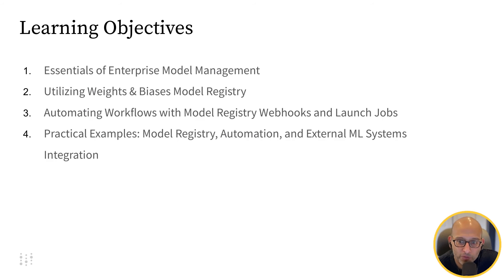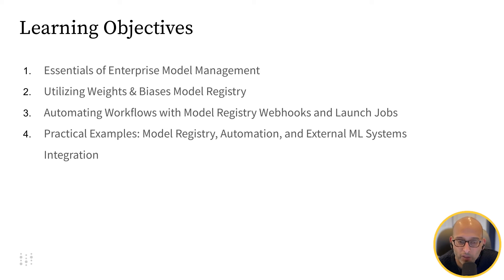The learning objectives for this course are: first, we'll talk about what enterprise model management is and the important concepts involved. Next, we'll cover the central feature that enables model management — the Weights and Biases model registry. Then we'll discuss automating workflows with the model registry using features like webhooks and launch jobs. Finally, we'll get into practical examples of using the model registry with automation, including integration with external ML systems.